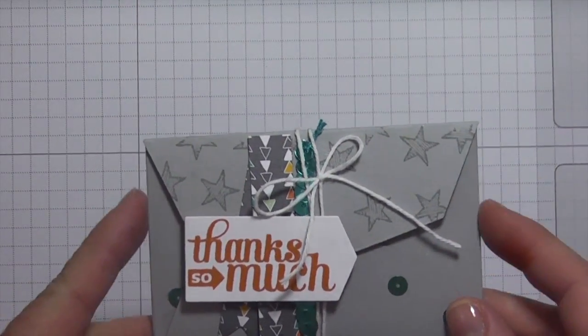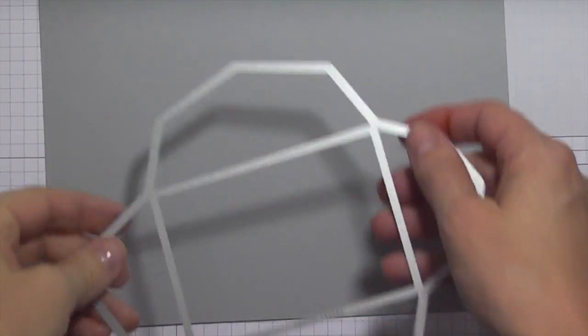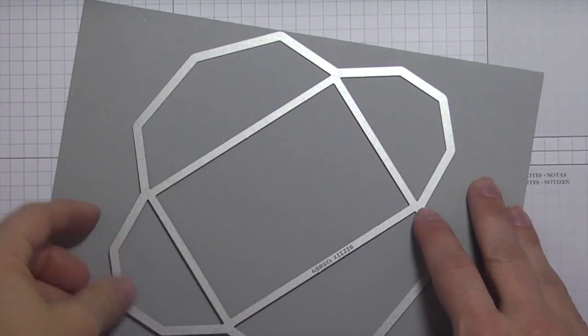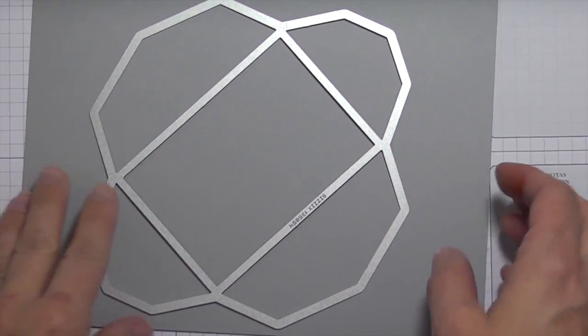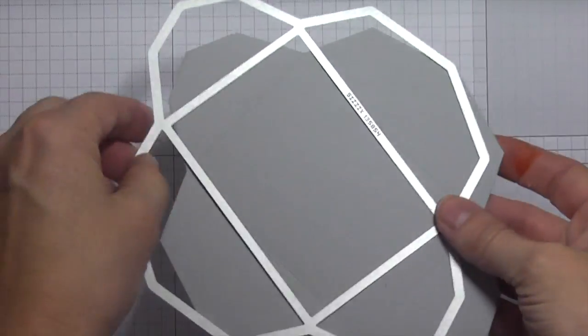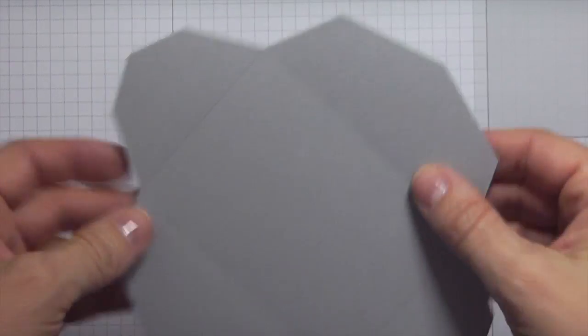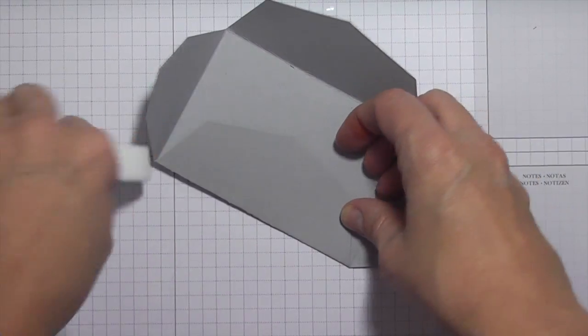What we're going to be using is smoky slate. This is just an eight and a half by eleven piece of cardstock that I've cut down to six and a half. I'm just going to lay the thinlit like so and run this through my big shot. Once I've run it through, this is the way it comes. The nice thing is that it's already scored for you.